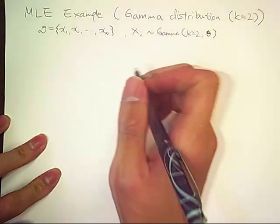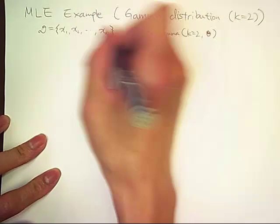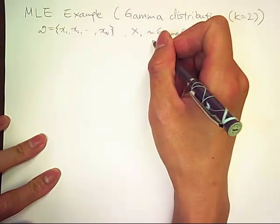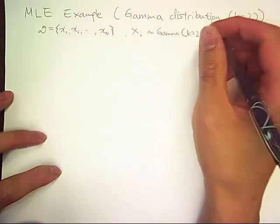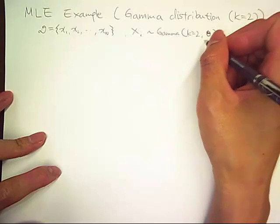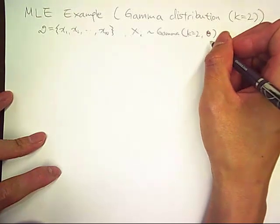So we have the same setup. We have n samples. Each of them are drawn from a gamma distribution with k equals 2 and beta.